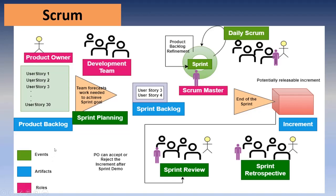These five main time-boxed events are conducted very frequently to deliver the product successfully and effectively. The ones highlighted in blue are called artifacts: Product Backlog, Sprint Backlog, and Increment. We will be discussing everything in detail in upcoming videos, but just remember we have three artifacts and five events. The names highlighted in pink are the Scrum team roles, which we already discussed — Product Owner, Scrum Master, and Development Team.